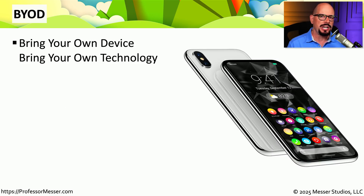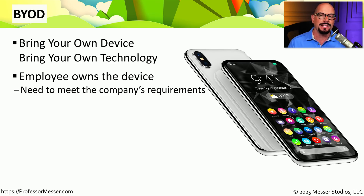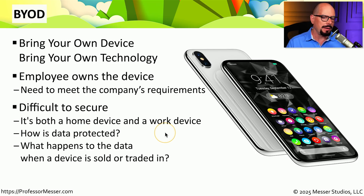BYOD is an interesting challenge for organizations. This stands for Bring Your Own Device — you may also see it referred to as Bring Your Own Technology. The employee owns the phone, and since they already have one, this simplifies things so they don't have to carry around two different mobile devices. But we need some way to protect the company data stored on that phone and to make sure all the user's personal information remains personal and private. This allows you to configure from the mobile device manager what part of that device is home or private, and what part is used for work purposes. You can set different parameters for how data is protected, and also set policies on what happens to the data if the phone is upgraded, traded in, or lost.